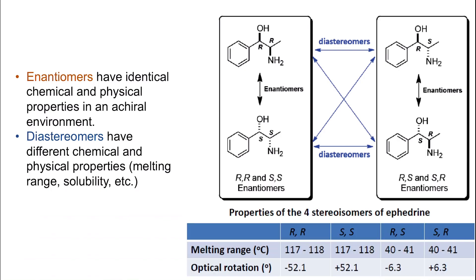Looking at the enantiomers and diastereomers of ephedrine: the R,R and S,S, which are enantiomers, have the exact same melting point range, and they only rotate plane polarized light in opposite directions but by the same value — minus 52 for one and plus 52 for the other. While diastereomers like R,R and R,S have completely different melting point ranges: R,R is 117–118°C and R,S is 40–41°C. The optical rotation is also different: minus 52 versus minus 6.3. The R,S and S,R enantiomers, on the other hand, have the same physical properties but opposite rotation of plane polarized light.